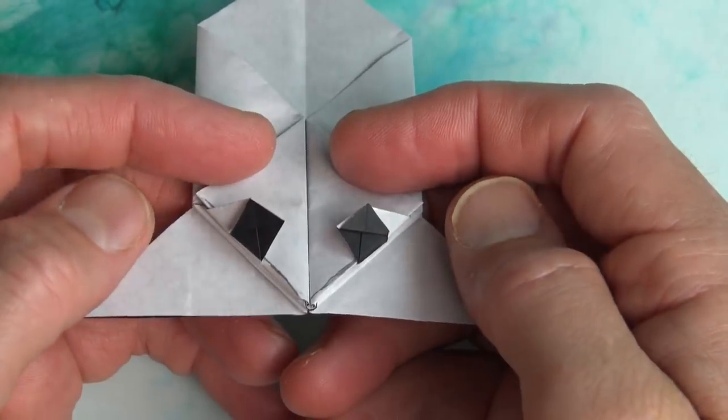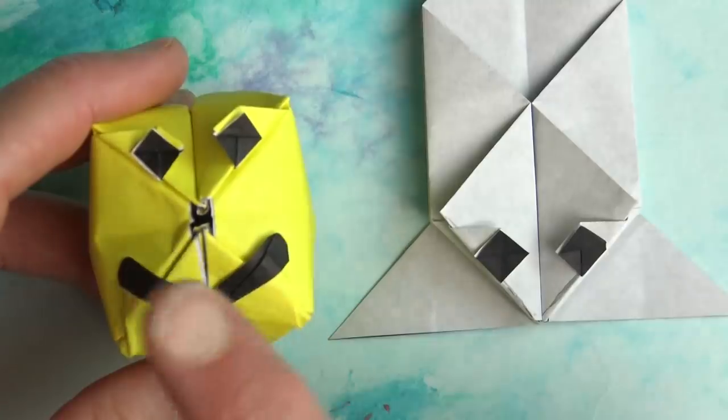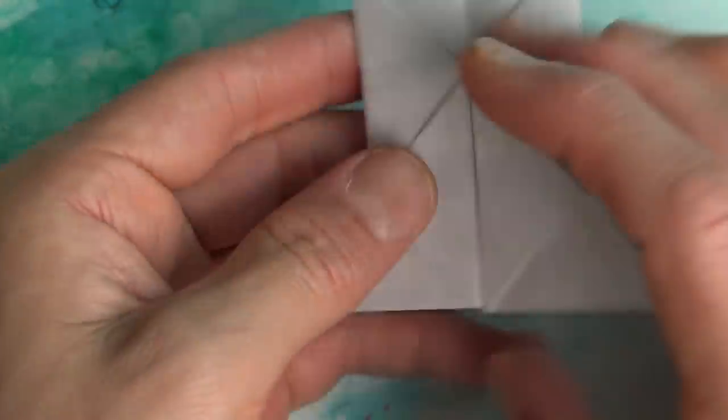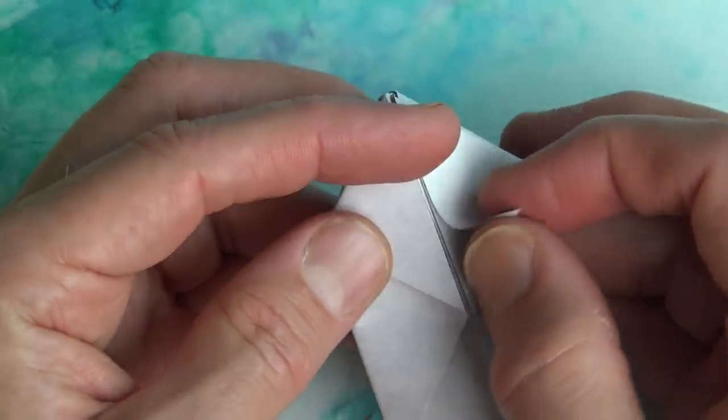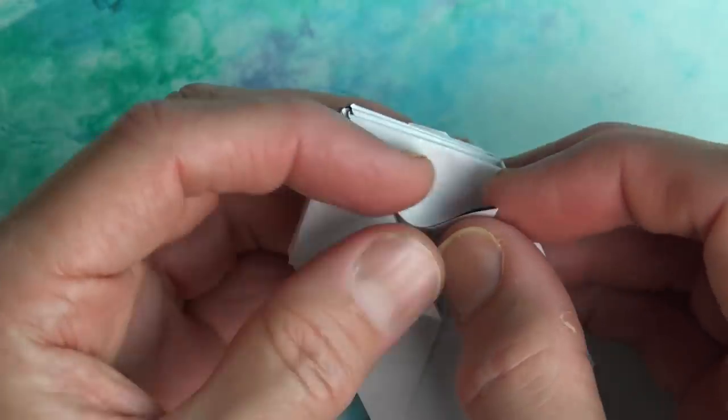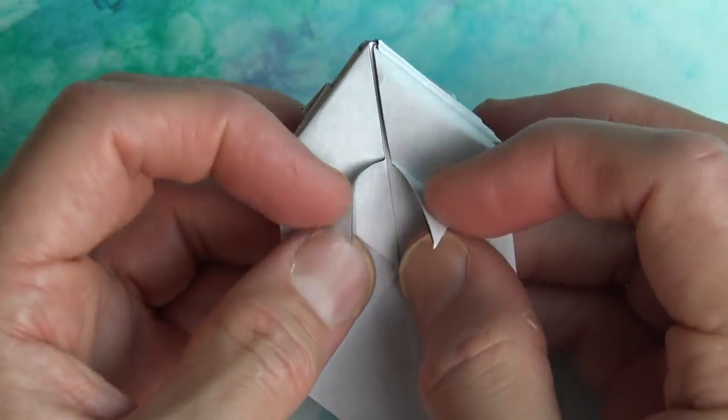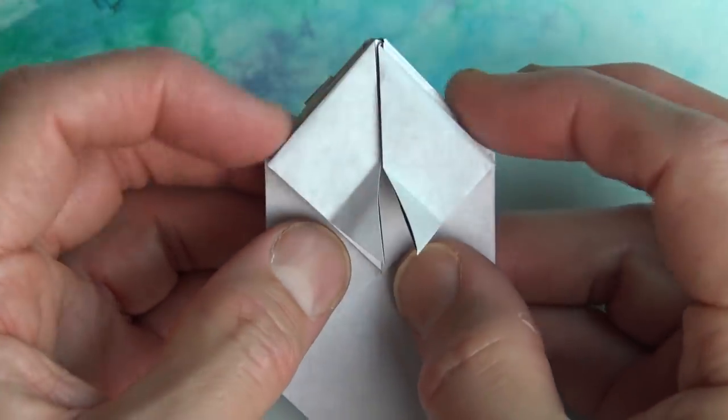And repeat. And the eyes are done. So we got the eyes, now time for the mouth. Turn over and fold these flaps like this. Rotate and fold the two flaps to the two corners. And unfold and fold these creases to these sides.